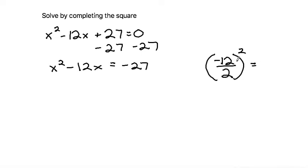The first step is negative 12 divided by 2. That gives us negative 6, and then after we square it, we get 36. That means we need to add 36 to both sides.